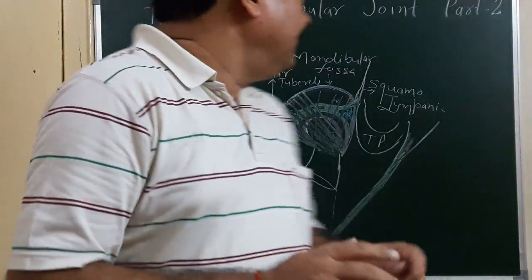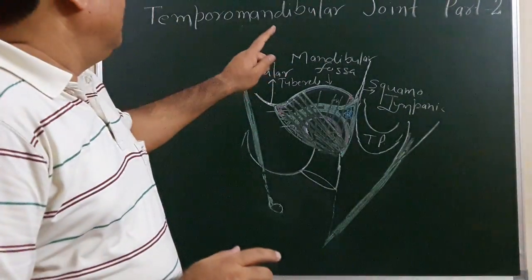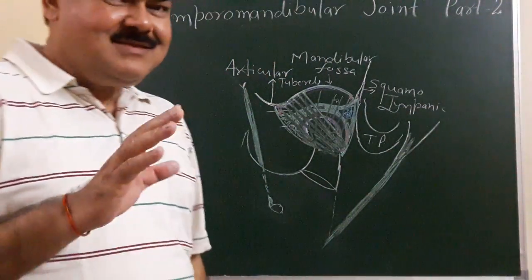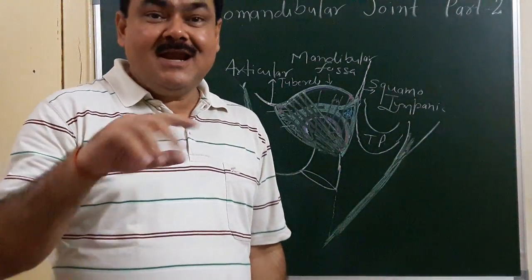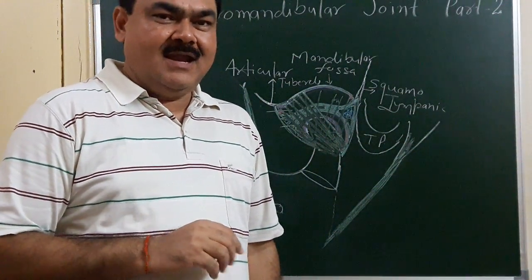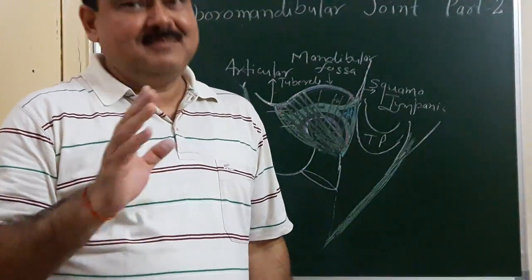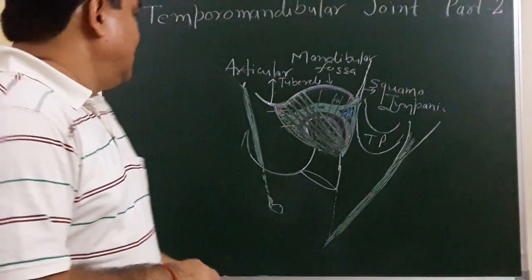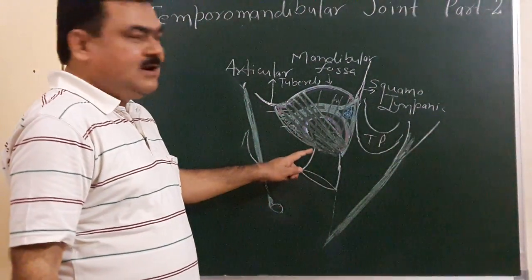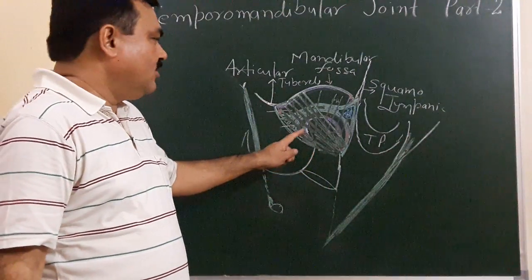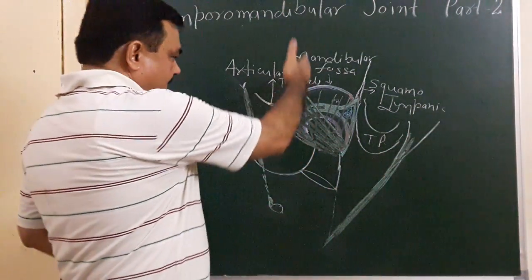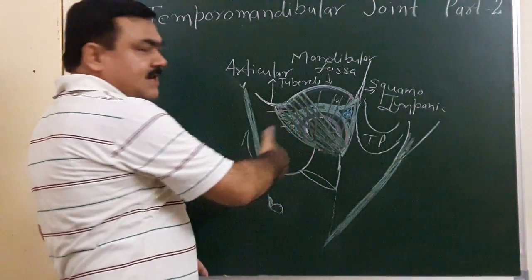We'll discuss the temporomandibular joint Part 2. In this section we'll discuss the relations of the temporomandibular joint, and the arterial supply and nerve supply of this joint. In this diagram you can see the lateral view of the temporomandibular joint. Now we'll cut a coronal section like this.